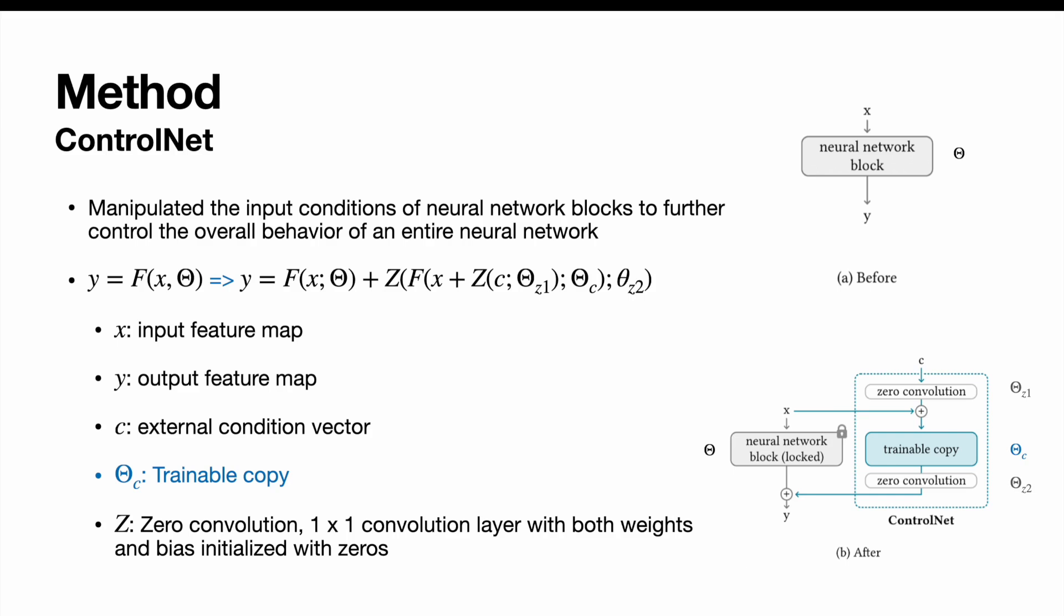The essential structure of ControlNet is as the image shows. ControlNet manipulates the input conditions of neural network blocks to further control the overall behavior of an entire neural network. Given a feature map X, a neural network block F with a set of parameters theta transforms X into another feature map Y. We lock all parameters with theta and then clone it into a trainable copy theta_C. The copied theta_C is trained with external condition vector C.